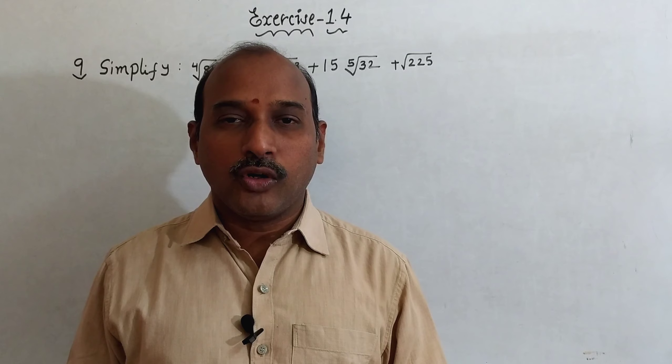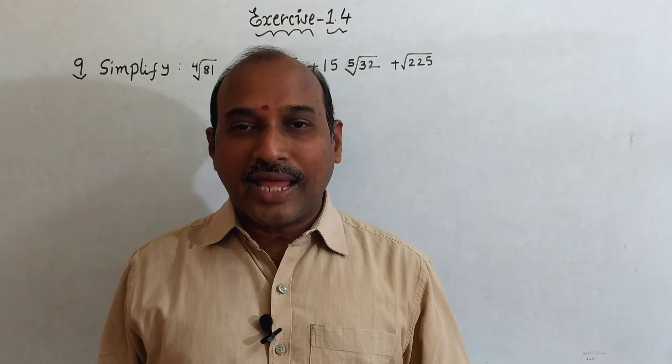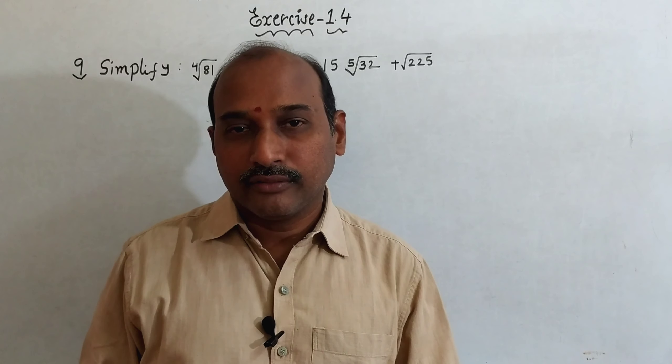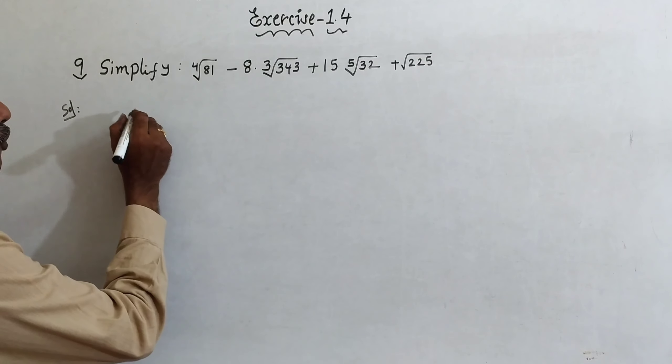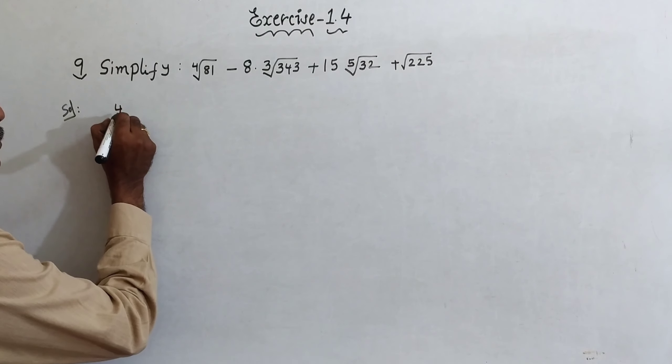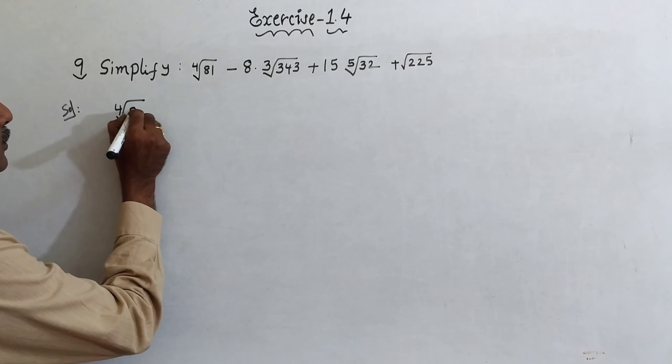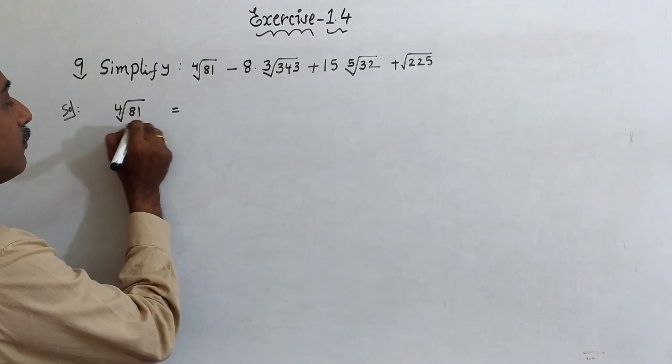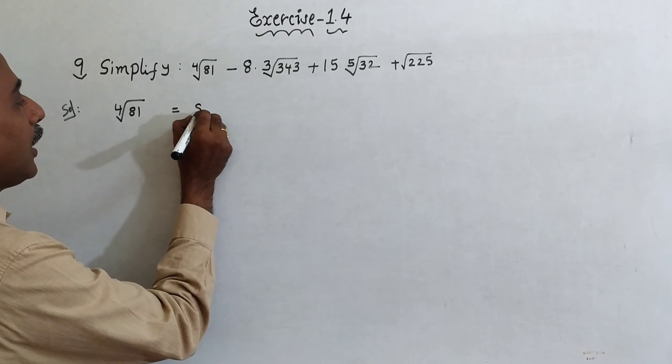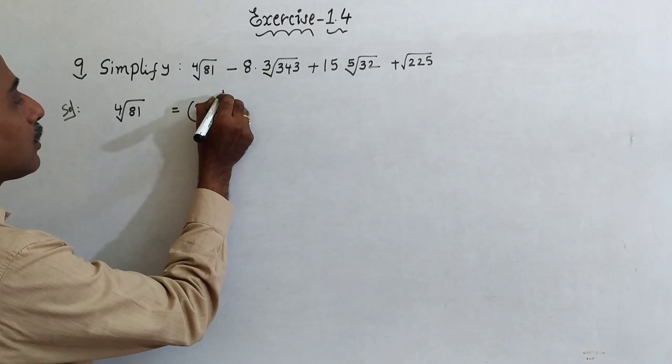Exercise 1.4, question number 9: Simplify. Now, come to the solution. Fourth root: fourth root 81, this you can write 81 all power 1 by 4.